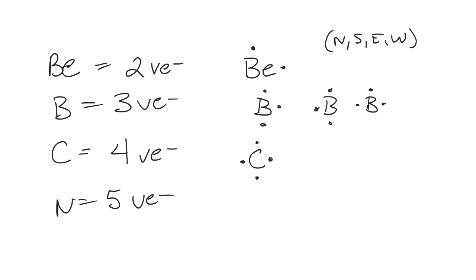Nitrogen has five valence electrons. For nitrogen, you have to put two together. It doesn't matter where you put the two — you could put two at the bottom, two at the top, or two on either side — as long as you have two paired together on one part and three single dots on the other.